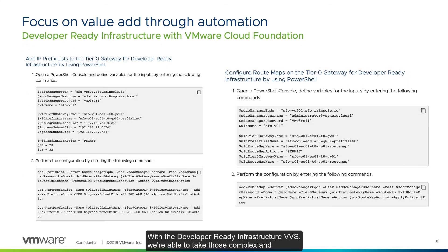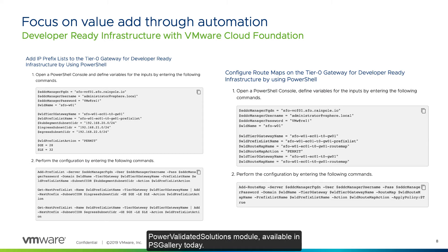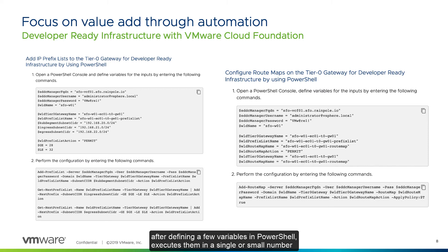With the developer-ready infrastructure VVS, we're able to take those complex and multi-part steps and turn them into a single line of PowerShell using the Power Validated Solutions module available in PSGallery today. We take actions that require a double-digit number of steps and, after defining a few variables in PowerShell, execute them in a single or small number of PowerShell commands, as shown here.